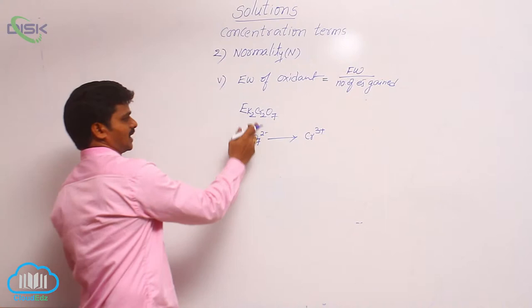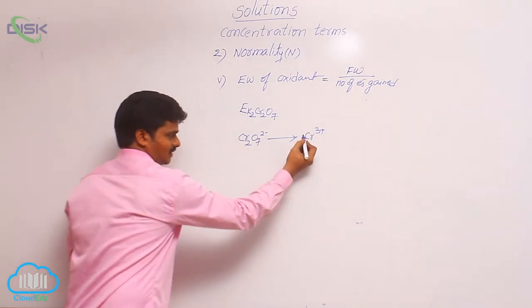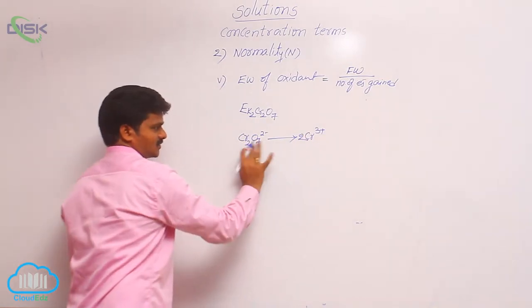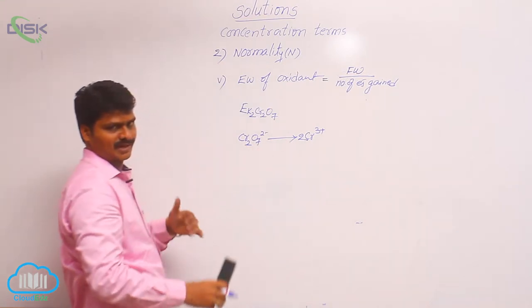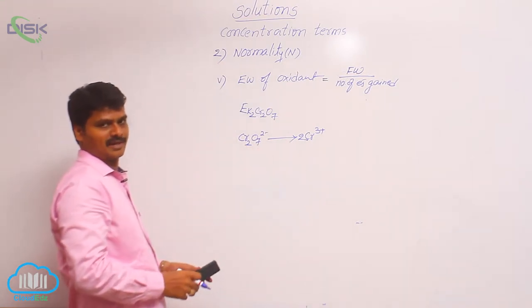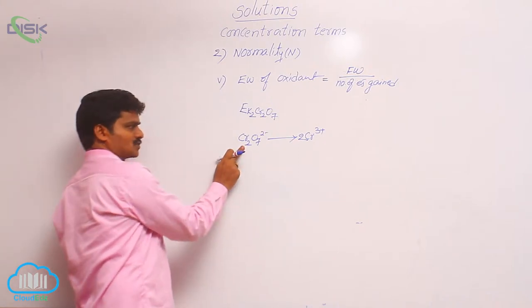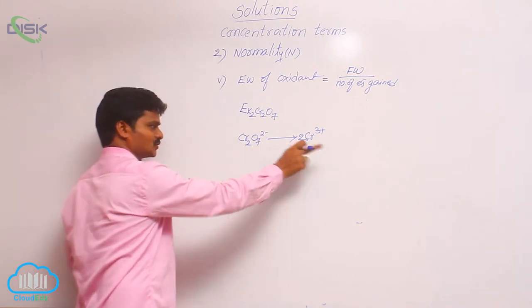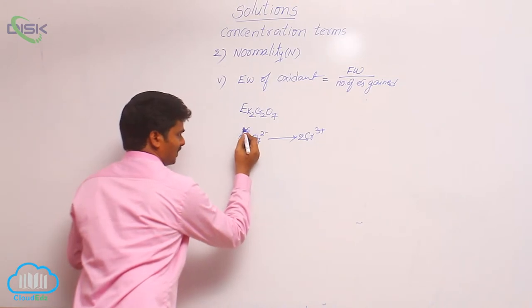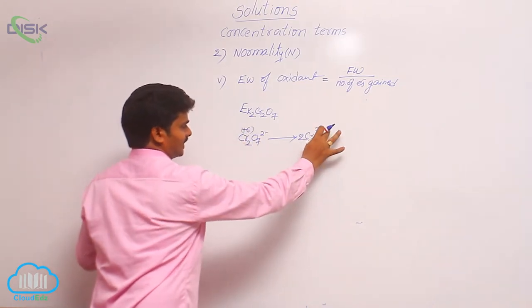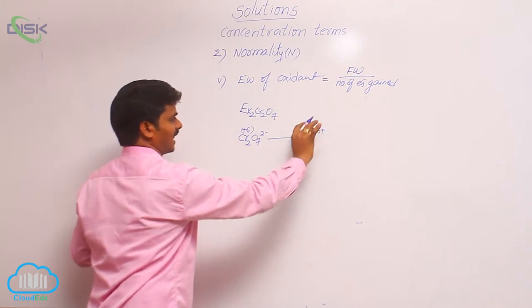Per molecule, there are 2 chromiums, so we must balance the number of atoms undergoing the oxidation number change — 2 chromiums on each side. The oxidation state of each chromium is +6 on the dichromate side, and +3 on the chromium ion side, since for a single ion its charge is its oxidation state.